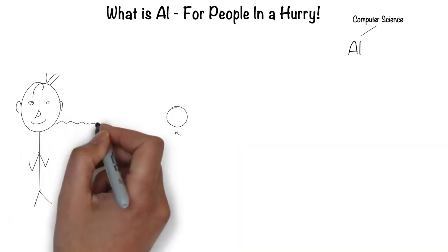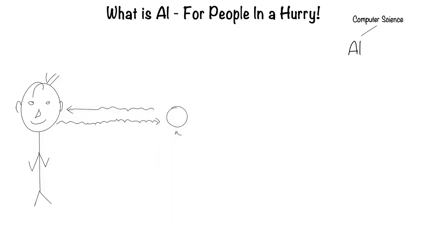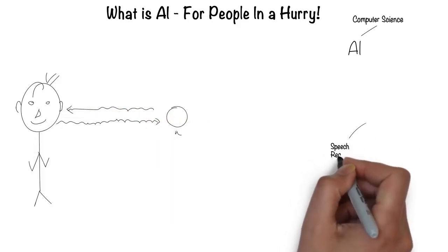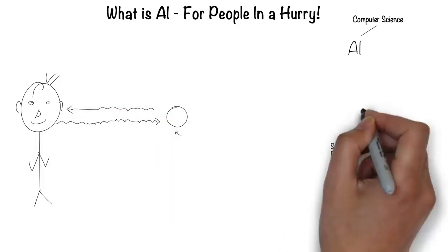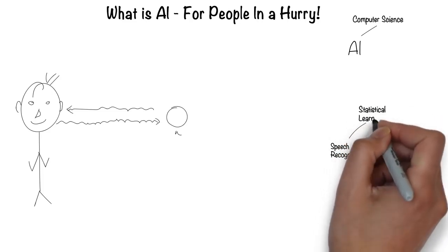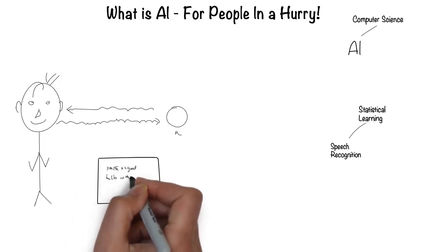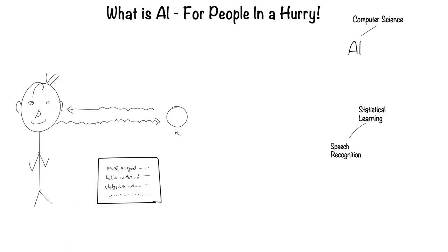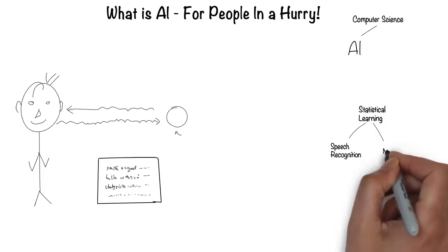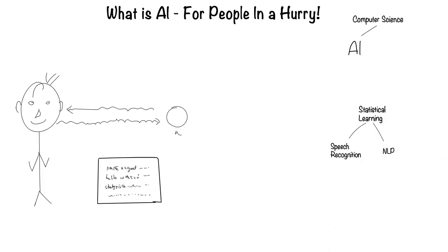Humans can speak and listen to communicate through language. This is the field of speech recognition. Much of speech recognition is statistically based. Hence, it's called statistical learning. Humans can write and read text in a language. This is the field of NLP, or natural language processing.